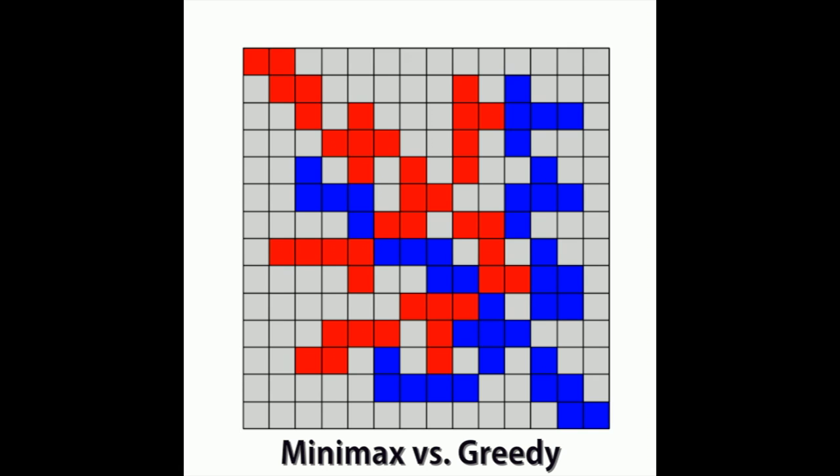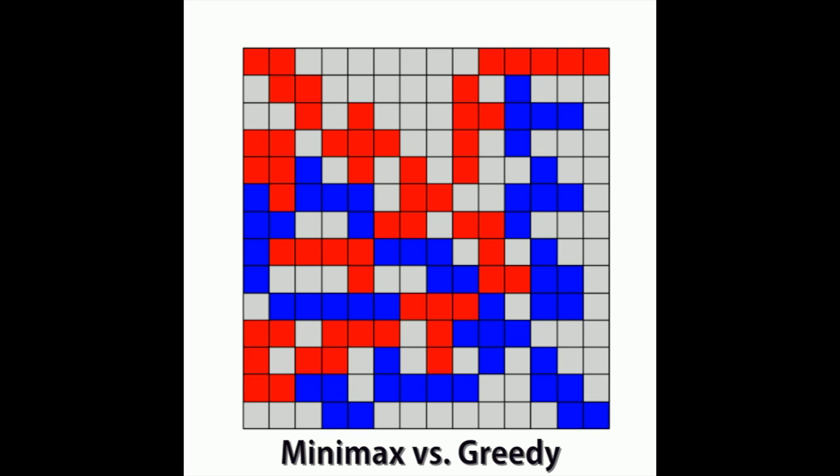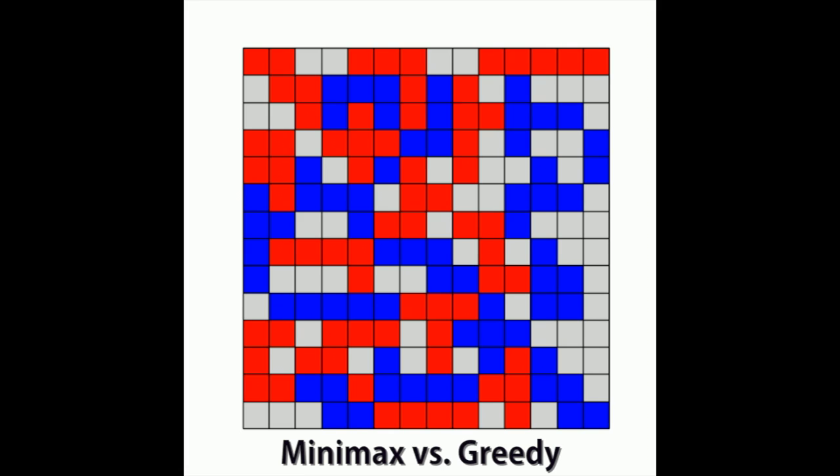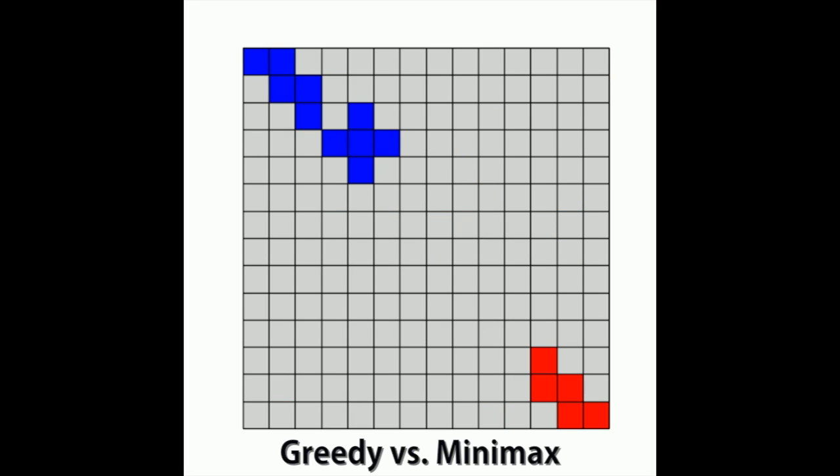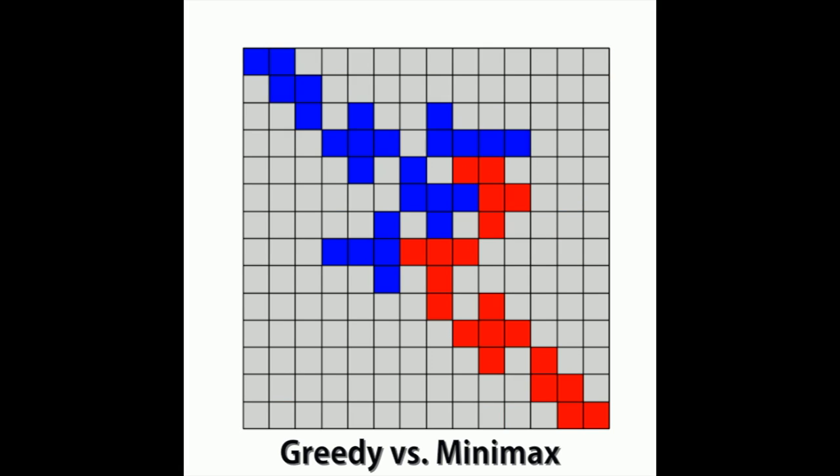Our greedy and Minimax players won against random every time we played. We quickly realized that going first is a big advantage and so we took this into consideration. We found that greedy that maximizes size more than corners does better than greedy that maximizes corners more, even when it goes second.